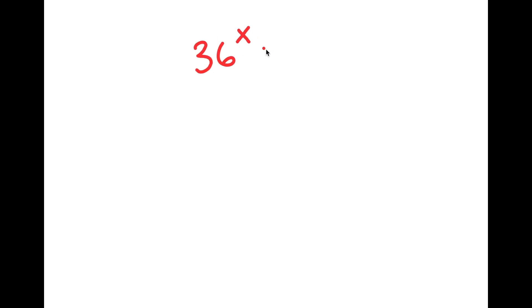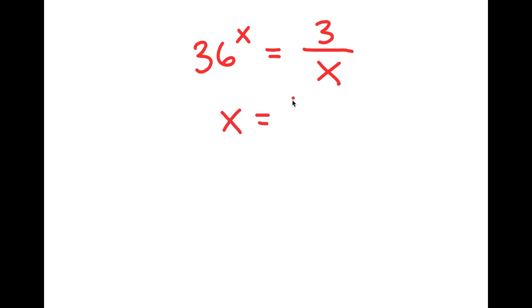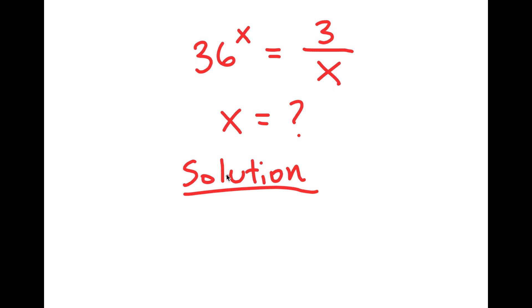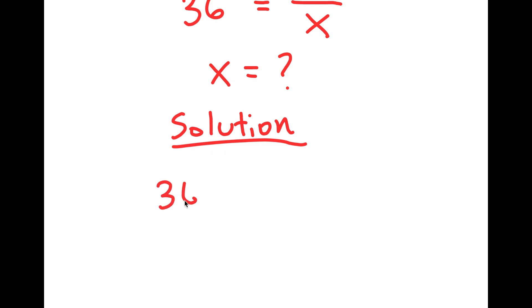In today's video, I'm going to be solving the equation 36 to the power of x is equal to 3 over x. My only variable in this equation is x, so that's what I'm going to be solving for. My equation is 36 to the power of x is equal to 3 over x.